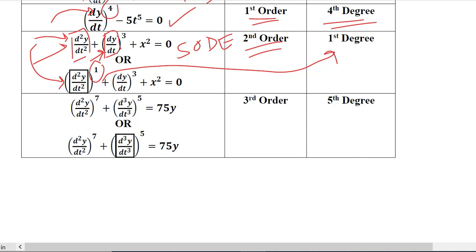Note that the power of the first order derivative was 3, but we did not choose it. Why? Because it was the lower order derivative present in the differential equation — we already have a second order derivative in the equation, so we focus on that one.